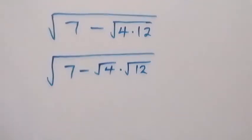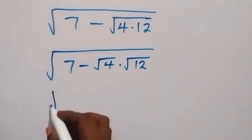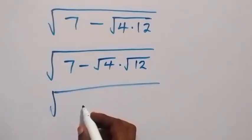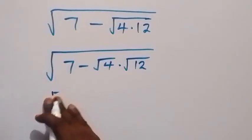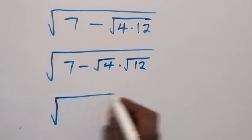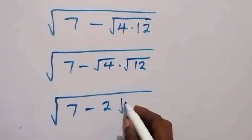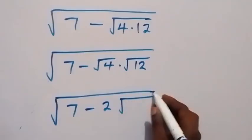And then root 4 here is 2. Then this is root 7, then minus root 4, which is 2. So we have root 7 minus 2, then times root 12. Also, let's write it as root 4 times 3.